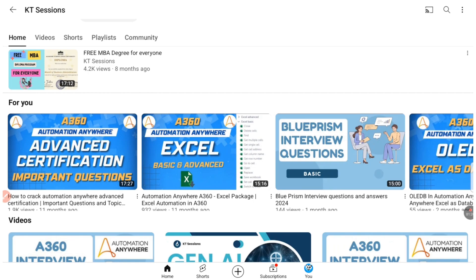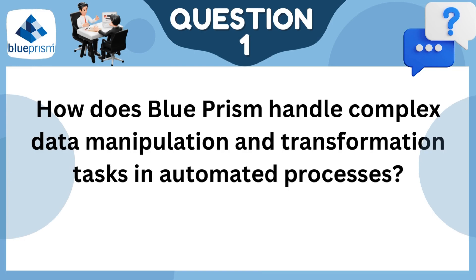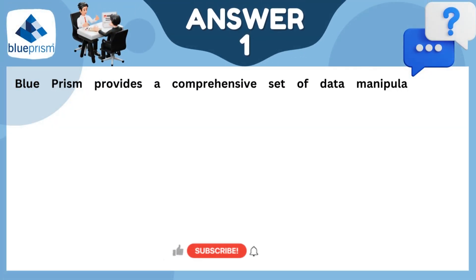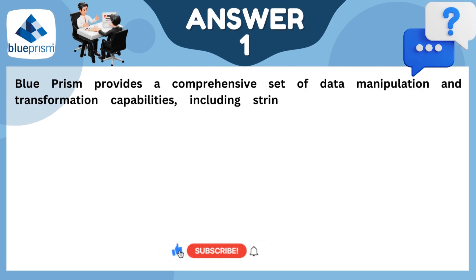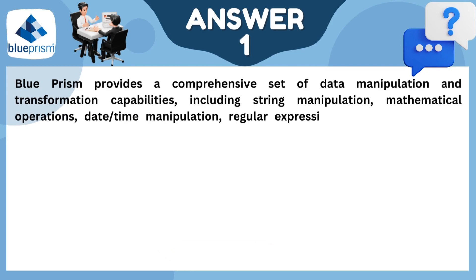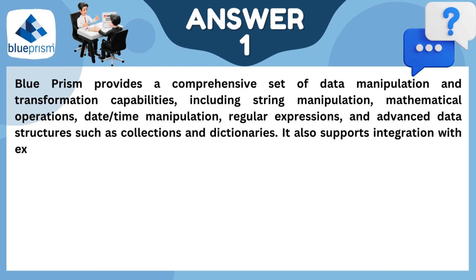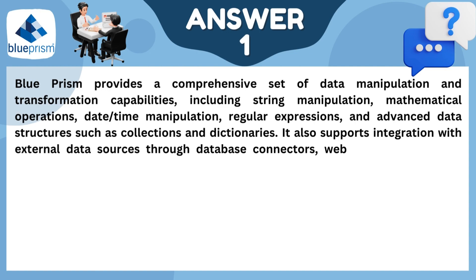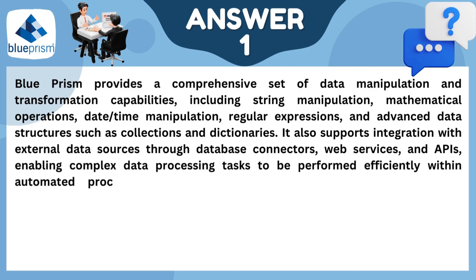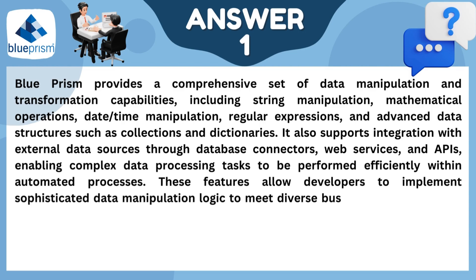The very first question is: how does Blue Prism handle complex data manipulation and transformation in automated processes? Blue Prism provides a comprehensive set of data manipulation and transformation capabilities including string manipulation, mathematical operations, date-time manipulation, regular expressions, and advanced data structures such as collections and dictionaries. It also supports integration with external APIs. You can check out our posted videos on these topics.